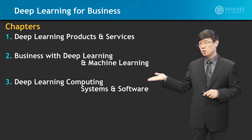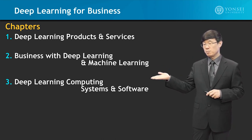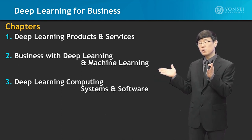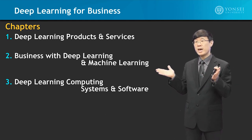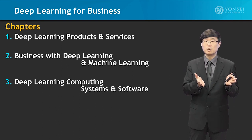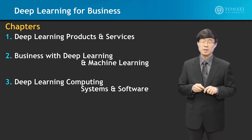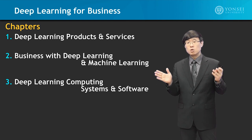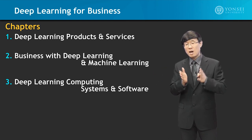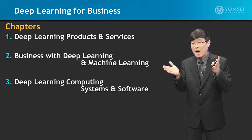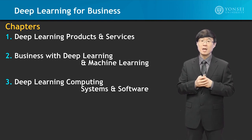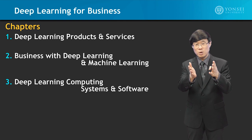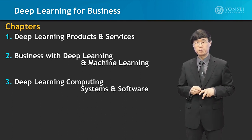Then we'll look into deep learning computing systems and software. You need to know the technology part so that you know what is available and how you can implement it. As a business professional, you need to know the techniques, what they're doing, and exactly how much capability they have, such that you can request the right resources for your business in the right way.